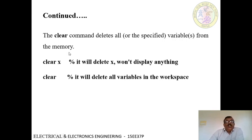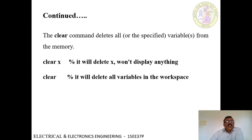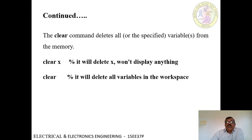Another command to clear the variables created by the user is the clear command. The clear command deletes all variables or specified variables. If you specify a particular variable name along with the clear command, it will clear only that variable. If no variable is specified and you type just 'clear', it will clear or delete all the variables in the workspace. For example, 'clear x' will delete only the variable x.